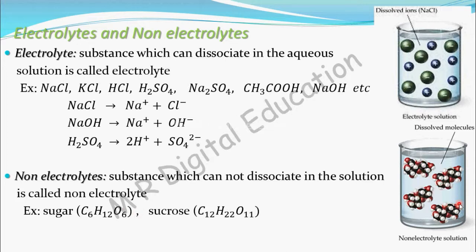Sugar will not dissociate in the solution, but electrolytes will. NaCl will dissociate into Na⁺ and Cl⁻ ions, but sugar will not — the sugar molecule remains whole and will not dissociate into carbon, hydrogen, and oxygen. So electrolytes are substances which can dissociate in the aqueous solution, and non-electrolytes are substances which cannot dissociate in the aqueous solution.